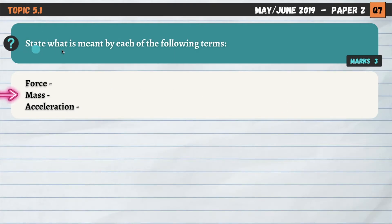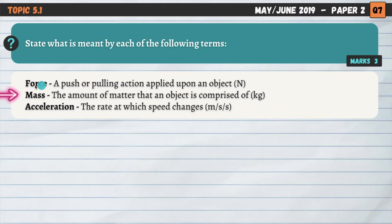Next question, 5.1 now. State what is meant by each of the following terms: Force, mass, and acceleration. Now this is a really easy command word. State is very similar to name or identify, so not a lot of detail required here. We simply need to state what is meant by force. So a push or a pulling action applied upon an object. And this is the definition that you will find in the short summary video on topic 5.1. I've included the units as well, just to show a little bit of extra knowledge. So newtons for force. Then mass, what's the definition of that? It's the amount of matter that an object is comprised of. And in this instance, the units are kilograms.